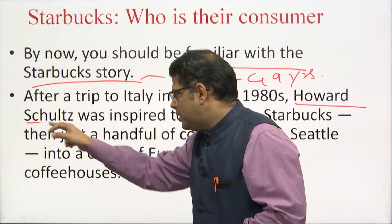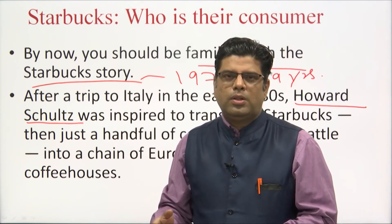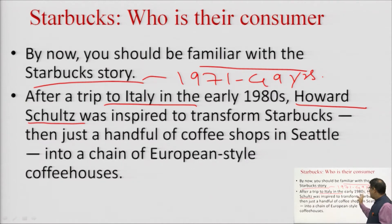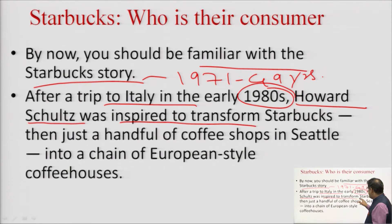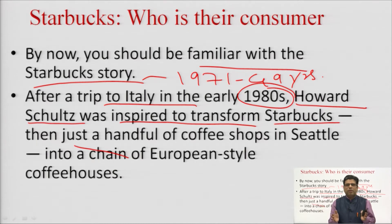Howard Schultz was a key person in the operation of Starbucks, taking care of it through the 1970s and 1980s. He went to Italy in 1980, and when he came back he was very inspired. He decided to transform Starbucks, which at that time comprised only a few restaurants. He was determined to expand it and make Starbucks an experience for consumers.